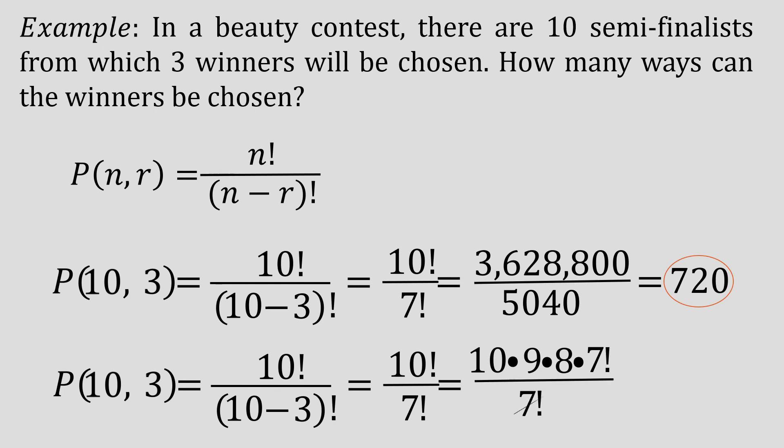And there, we can cancel out or cross out 7 factorial. Thus, our result is 10 times 9 times 8, which is 720. We'll have the same answer for the number of ways the winners can be chosen, and that is 720 ways.